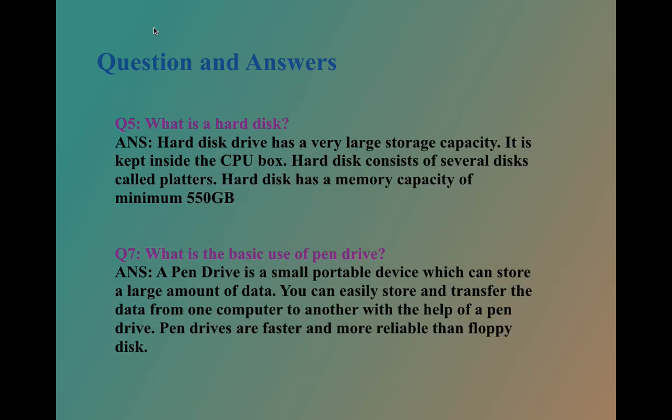Coming to the fifth question. What is a hard disk? The answer is, hard disk drive has a very large storage capacity. It is kept inside the CPU box. Hard disk consists of several disks called platters. Hard disk has a memory capacity of minimum 550 GB.